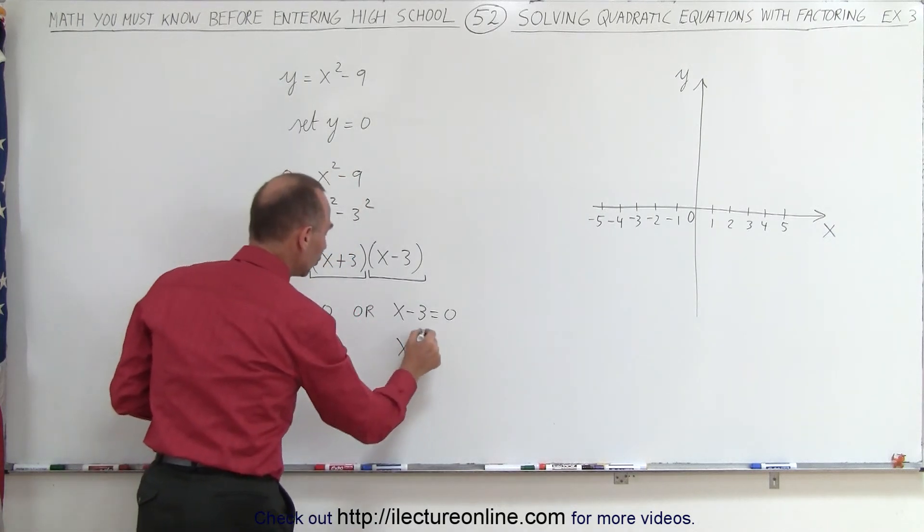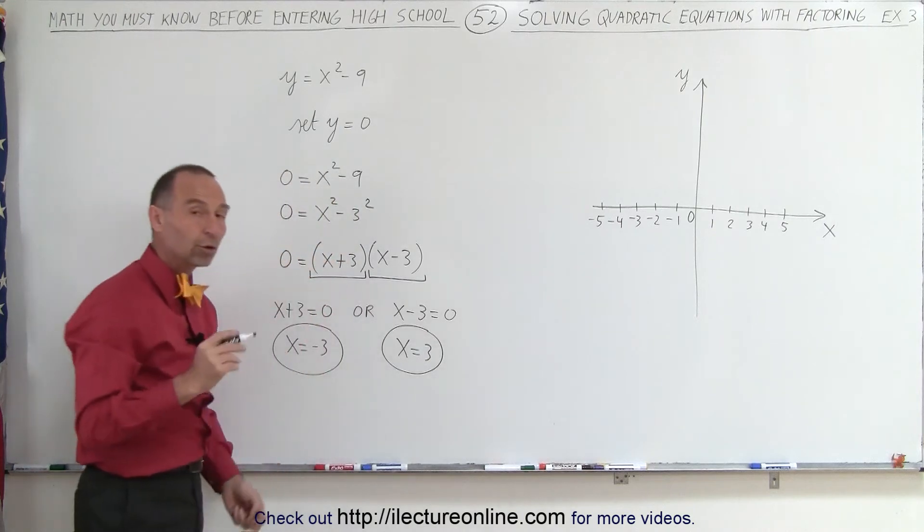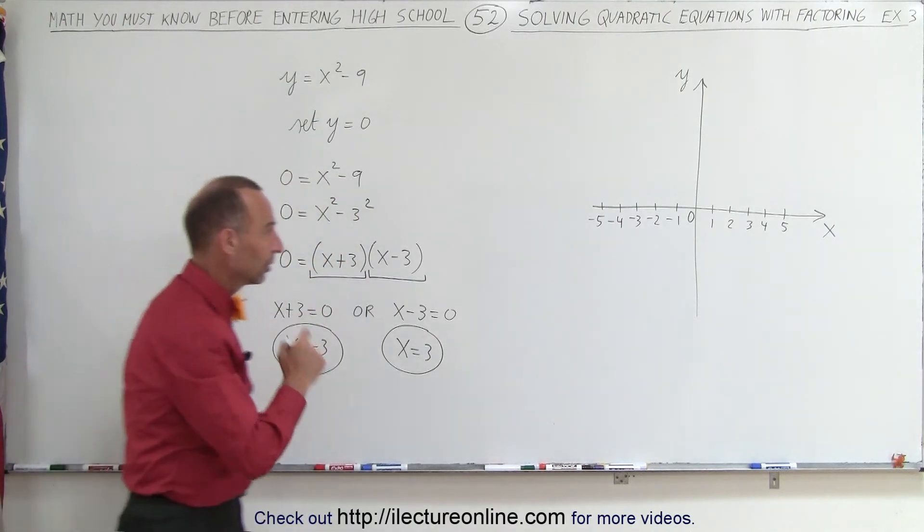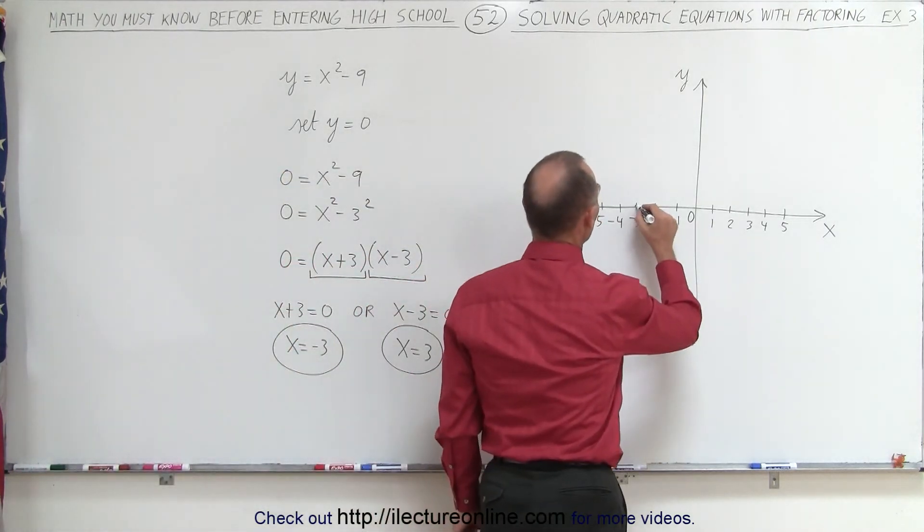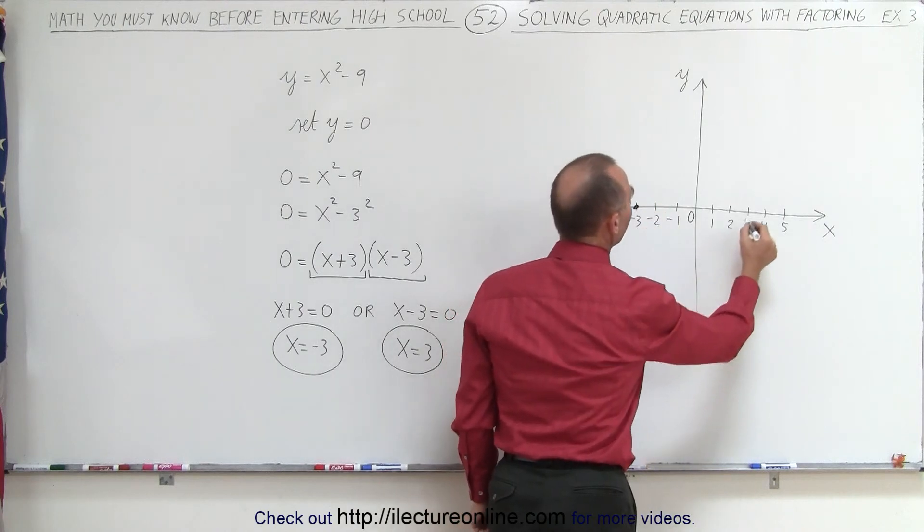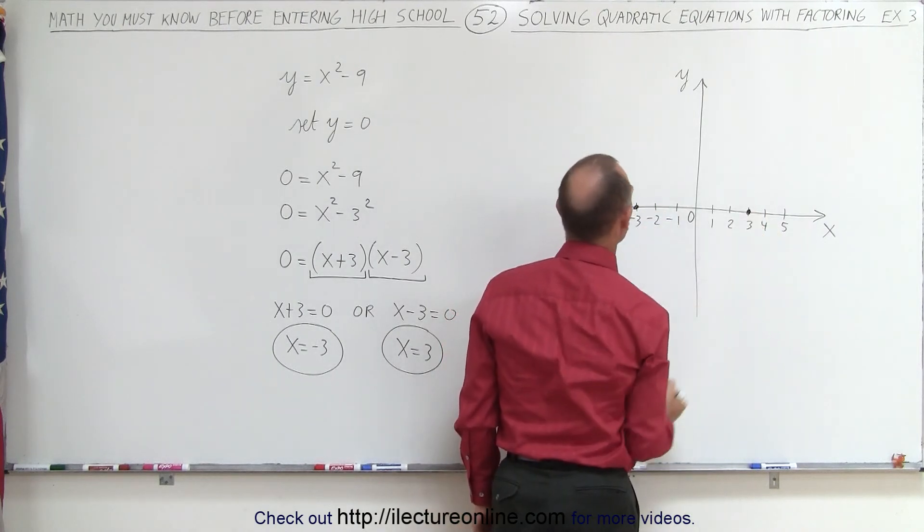So, it does look like there's two places where the graph will cross the x-axis. Going over here, we know that it crosses at x equals minus 3 and it crosses at x equals plus 3.